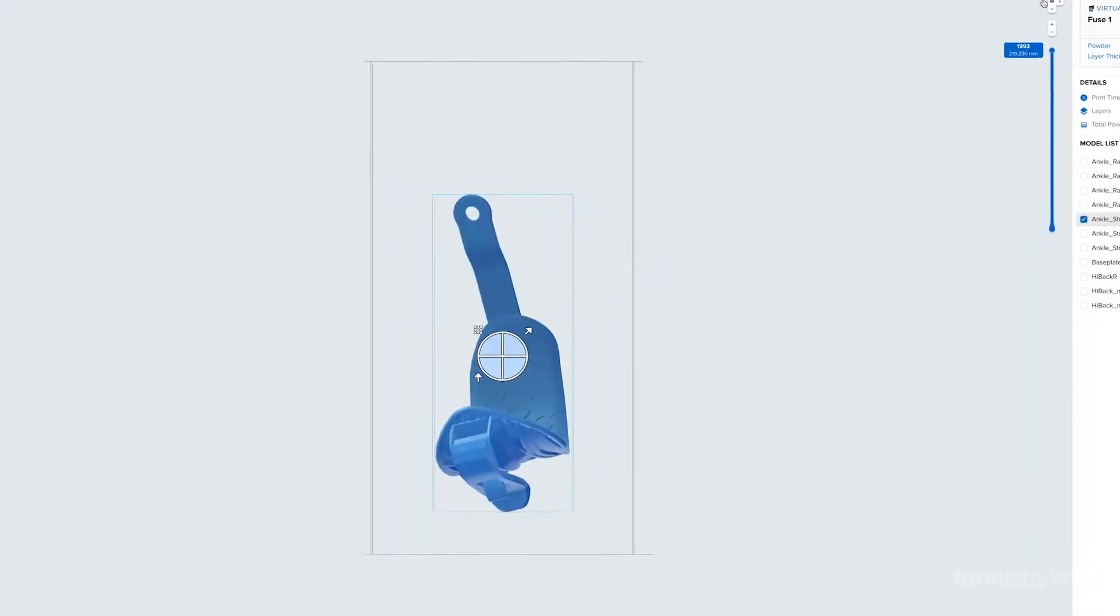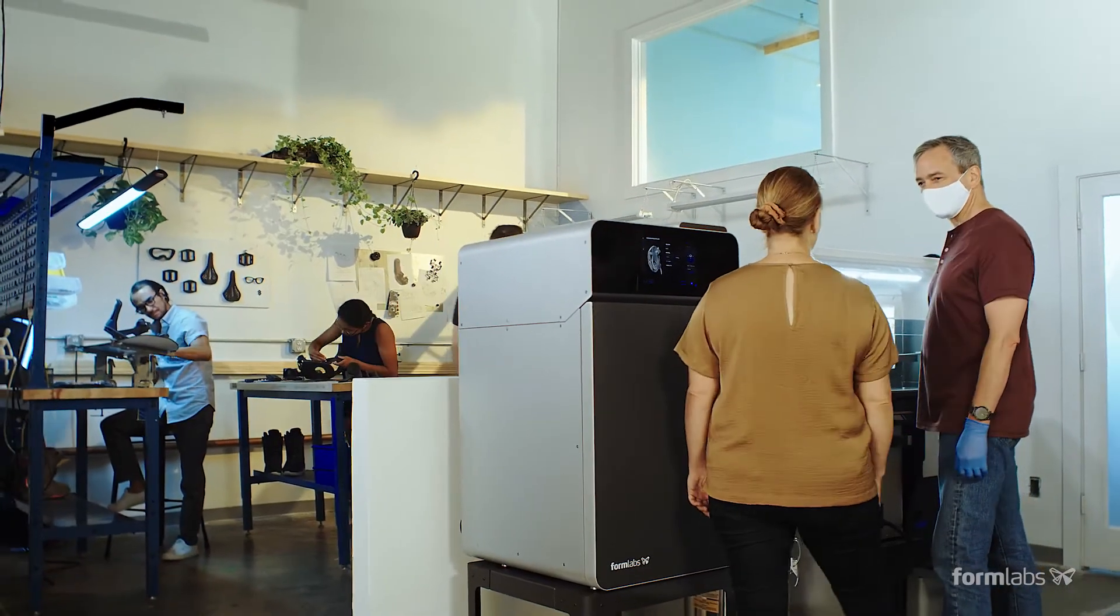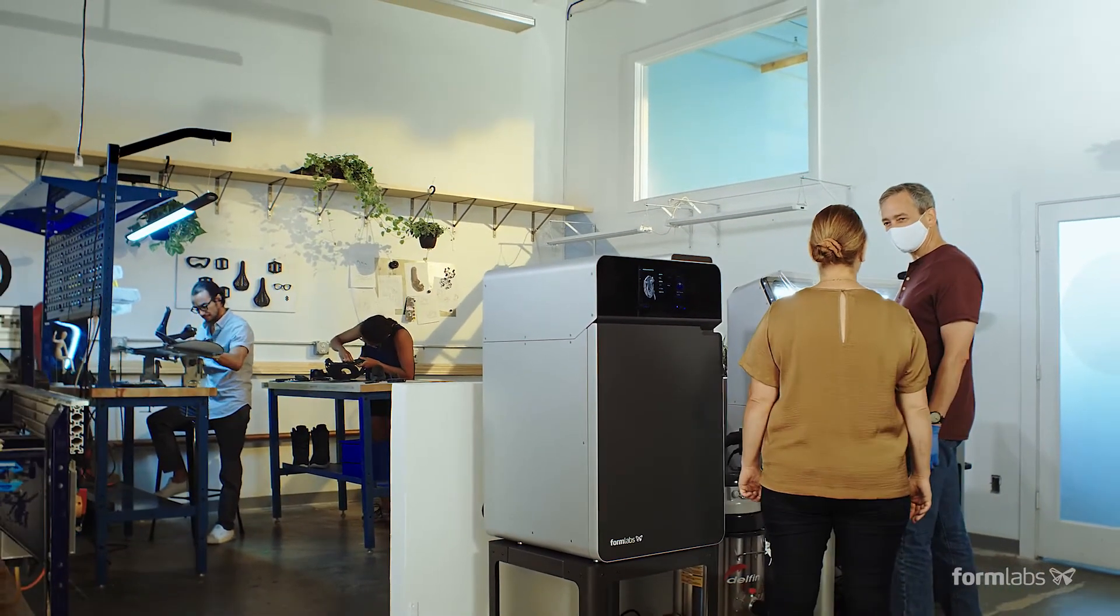Selective laser sintering or SLS 3D printing is relied on for printing strong functional nylon parts. In the past, SLS has been too expensive and difficult to use for many businesses.